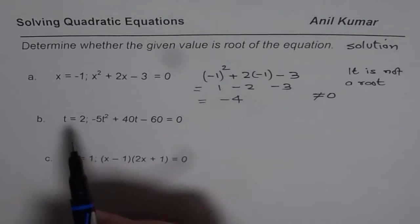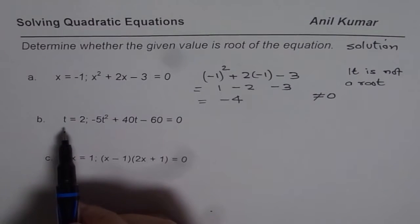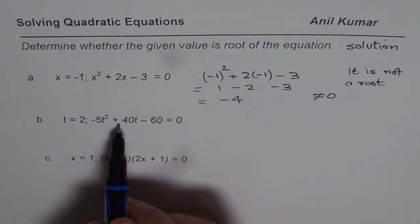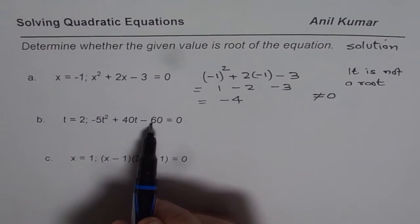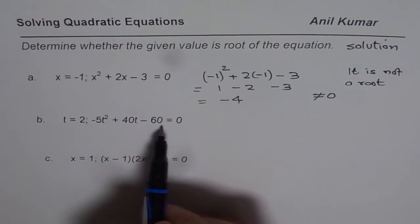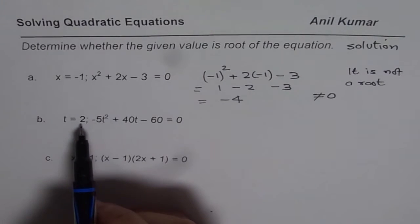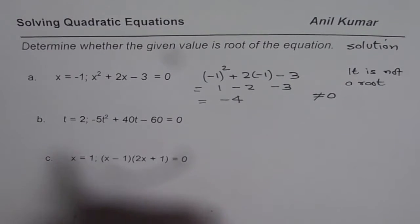Now let us see how to do part b. Here we are saying t = 2 where the equation is -5t² + 40t - 60 = 0. Again, we have quadratic equation in standard form. Here the independent variable is t. Let us substitute t = 2 in the given equation.